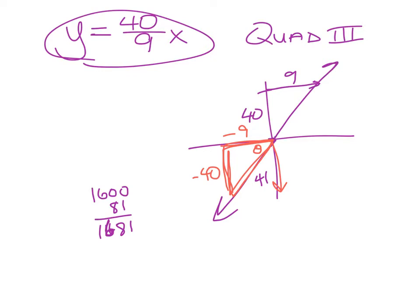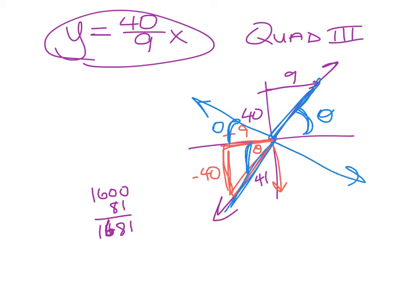For a similar problem with y = (40/9)x in Q3: opposite = −40, adjacent = −9, and Pythagorean theorem gives √(1600 + 81) = √1681 = 41. So hypotenuse = 41. Then fill in your six trig functions. Theta is always the distance from the x-axis down or up to the terminal side, in any quadrant.